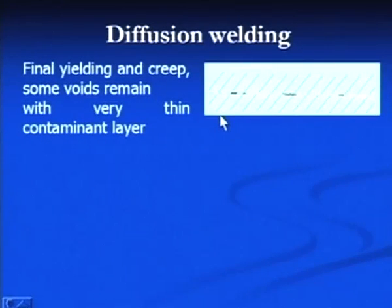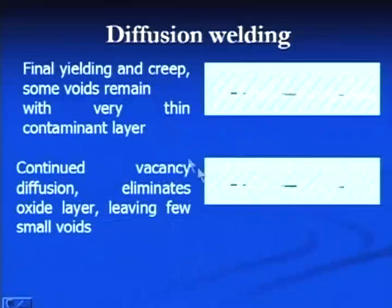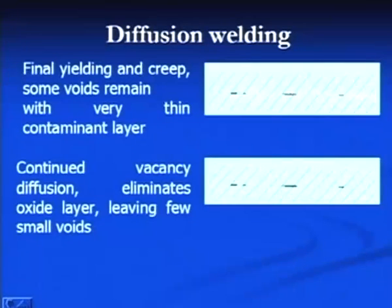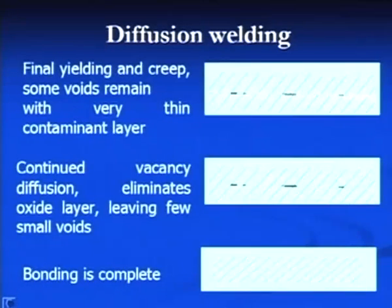If this process continues for a long time, the number of voids at the interface keeps reducing. Finally, continued vacancy diffusion and removal of the oxide layer results in very few voids at the interface. If diffusion welding at high temperature and pressure is continued for a very long time, a complete bond between the two plates can be obtained, free from voids and porosities.